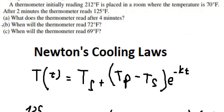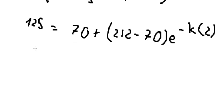We need to find the value of K because we can answer question A, B, C. 125 minus 70 we have 55, and 212 minus 70 we have 142, e to the power of negative 2k. So we divide both sides by 142.